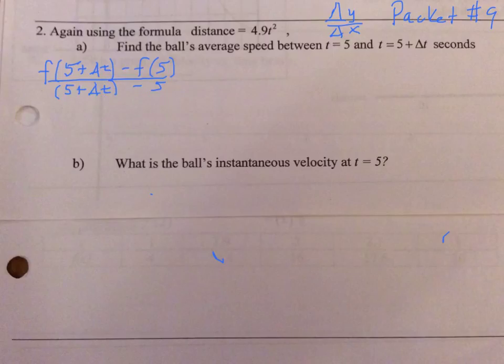In order to do those specifically, we need our function value. Our function is 4.9 t squared. We need to find what f of 5 plus delta t is, so I'm going to have 4.9 times the 5 plus delta t, and I need to square that value.